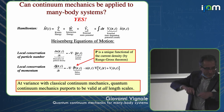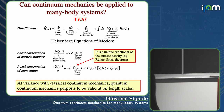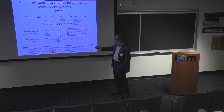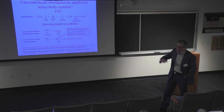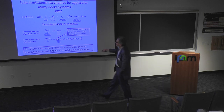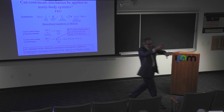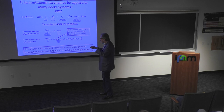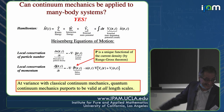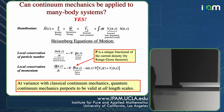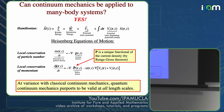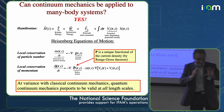The reason this is possible is because this functional P as a functional of current is strongly retarded — it has a memory. When you Fourier transform, it depends on the frequency, which is the energy of the excitations. So different excitations at different energies effectively have a different P going through them, and that resolves this paradox.